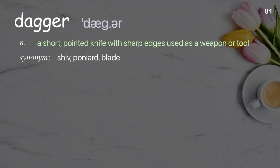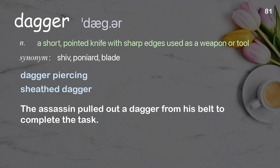Dagger: a short, pointed knife with sharp edges used as a weapon or tool. Examples: dagger piercing; sheathed dagger. The assassin pulled out a dagger from his belt to complete the task.